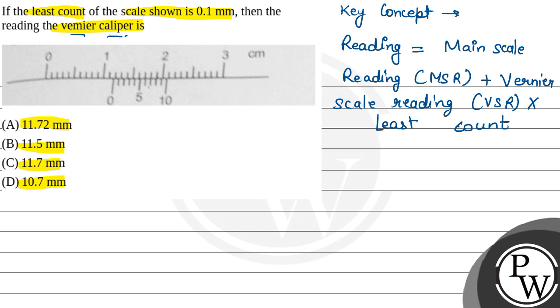In the question, we are given that this is the main scale, and this lower scale is the vernier scale. And the object match of this scale is at this point. So we will solve on the basis of this.